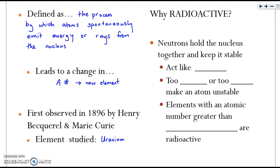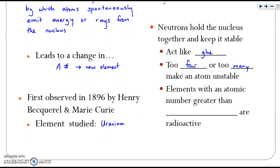They found out a little too late that uranium was radioactive and all the adverse health effects it would have. In general, neutrons hold the nucleus together to keep it stable — they act like glue because they're neutral. The nucleus contains both protons and neutrons, and the protons are positive and do not like to be together, so the neutrons serve as a barrier to prevent them from splitting apart. If you have too few or too many neutrons, an atom can become unstable. Eventually, when you get up to about element 83, no matter how many neutrons you add, that element is more likely to be radioactive. Elements with an atomic number greater than 83, which is bismuth, are radioactive.